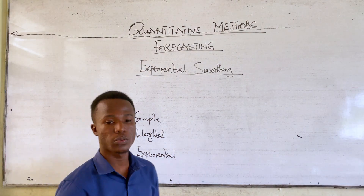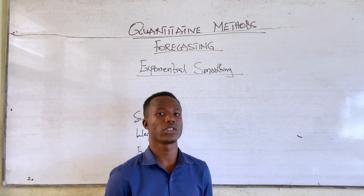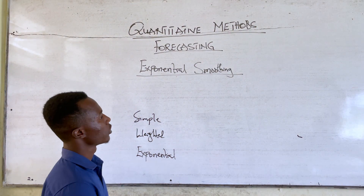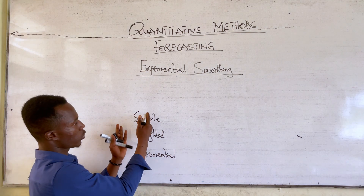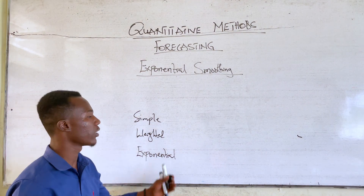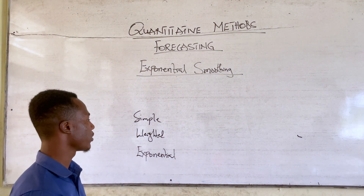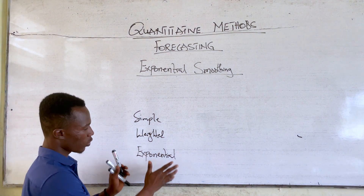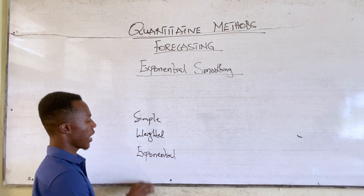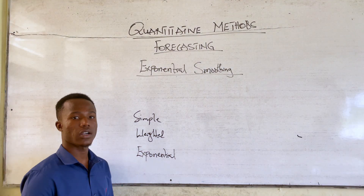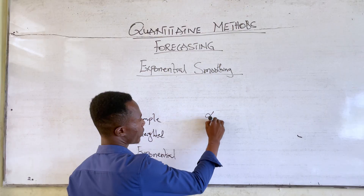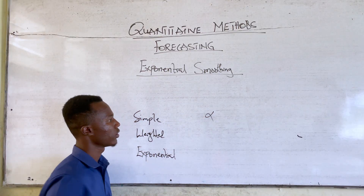For exponential moving average, we are going to look at two points. It's just like how we solved for the simple moving average and the weighted moving average, but we are going to change things now because on the exponential, we are going to have a constant, which is alpha.